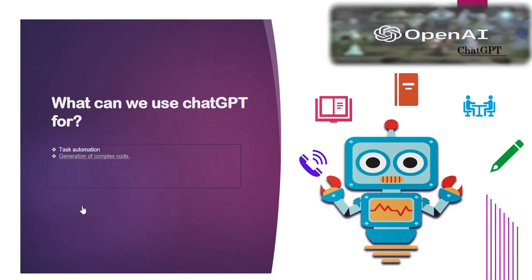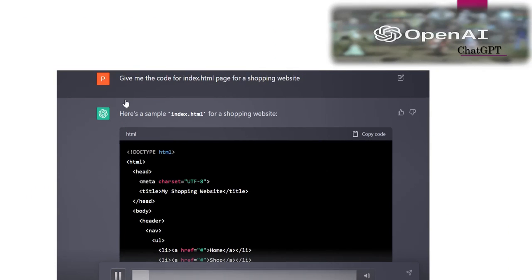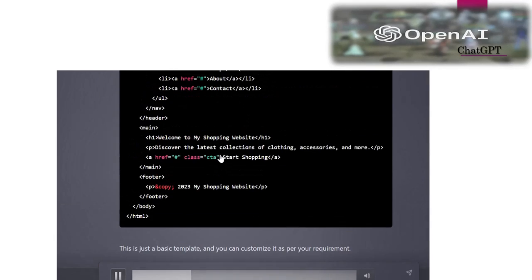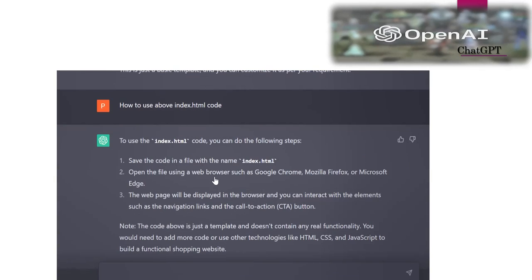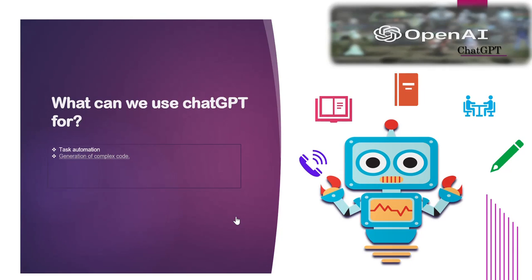Next is generation of complex code — that's very important. It can help developers generate complex code for their websites or applications within a minute. As you can see here, we have asked it to give code for index.html, and it is writing the code for us. You can also ask it how to use that code. So even if you are a fresher or not very familiar with the technology, you can take help from ChatGPT — it will give you a template of your code and steps on how to use it, turning hour-long tasks into just minutes.